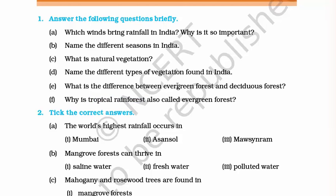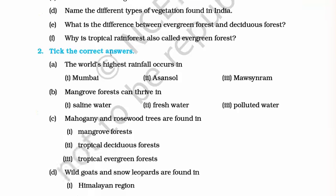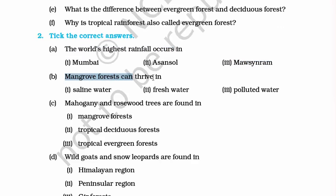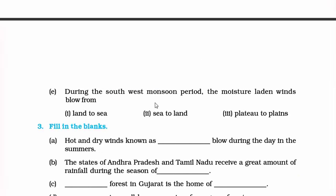What is the difference between evergreen forest and deciduous forest? Evergreen forest — that is tropical rainforest — is forever green because it receives heavy rainfall. Deciduous forests consist of trees that shed their leaves at some point in the year. Why are tropical rainforests called evergreen forests? Because they receive heavy rainfall and are in the tropical area between the Tropic of Cancer and Tropic of Capricorn. The world's highest rainfall occurs in Meghalaya. Mangrove forests can thrive in saline water. Mahogany and rosewood trees are found in tropical evergreen forests. Wild goats and snow leopards are found in the Himalayan region.